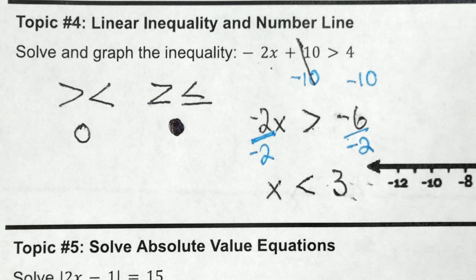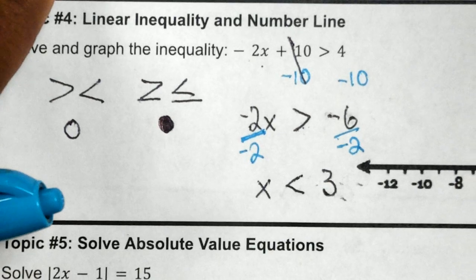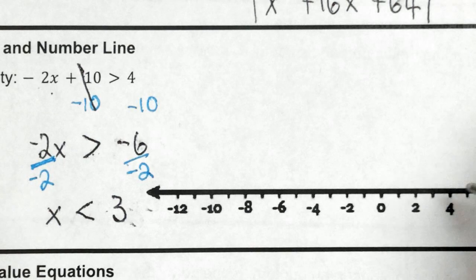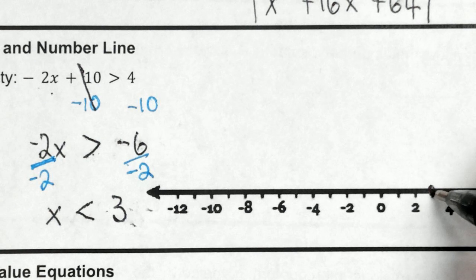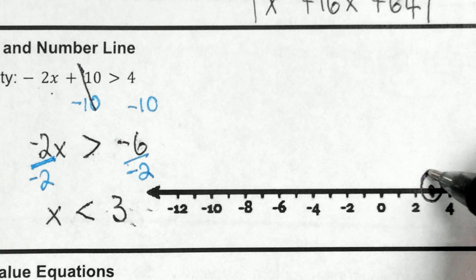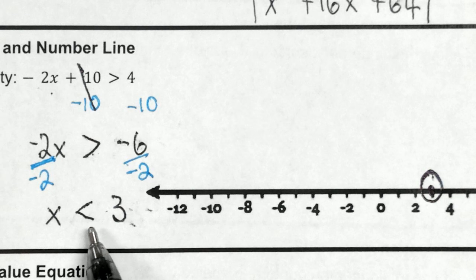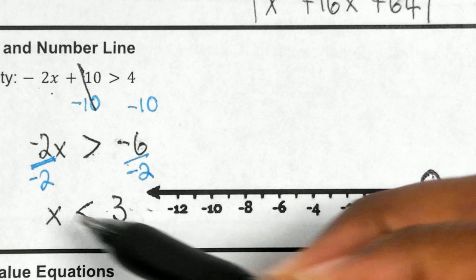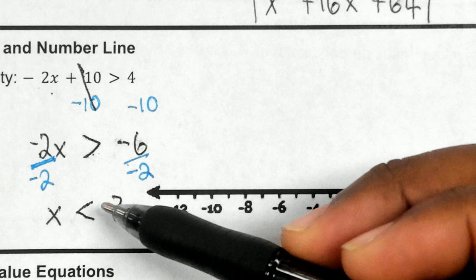On my number line, I'm going to look for the number 3, which is right here in between 2 and 4. And I'm going to have what type of circle? An open circle because there's no line underneath, there's no or equal to. And this is like an arrow and it's pointing to the direction that you're going. It's pointing to the left because it's saying that x is less than 3.